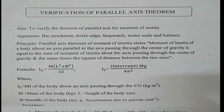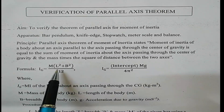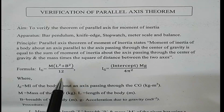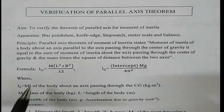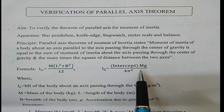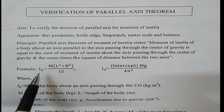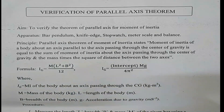Based on this principle, we have the formula: Ig = m(l² + b²)/12. This is the standard formula to calculate the moment of inertia about the center of gravity for the given body. Similarly, graphically, the moment of inertia through the center of gravity Ig = intercept × m × g / 4π². Experimentally, you have to find Ig using both equations.